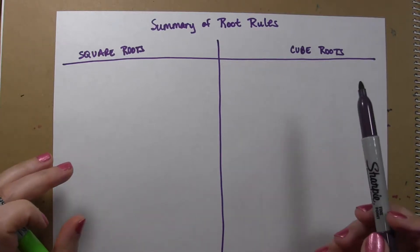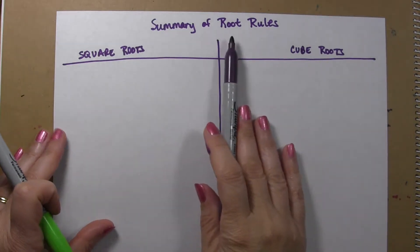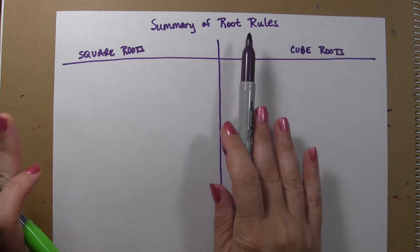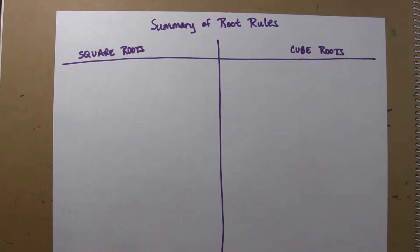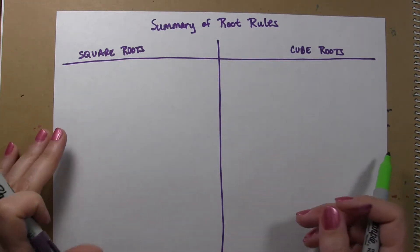Hi everyone. We're going to talk for a few minutes and just sort of summarize the rules that we're learning relating to taking different roots of numbers.